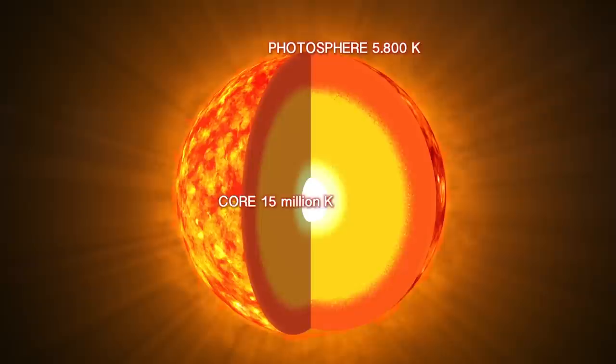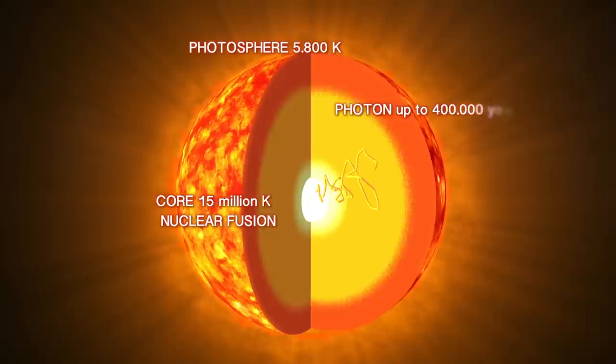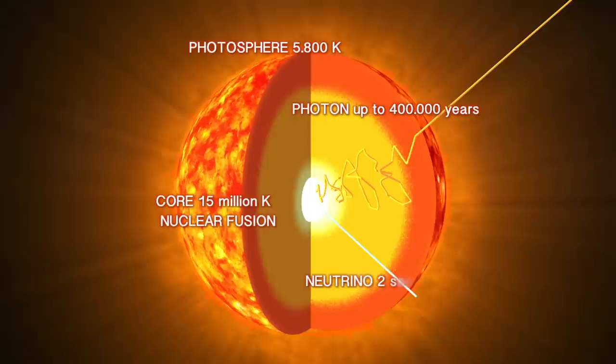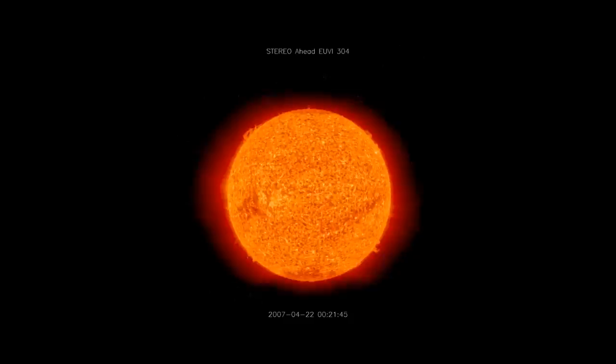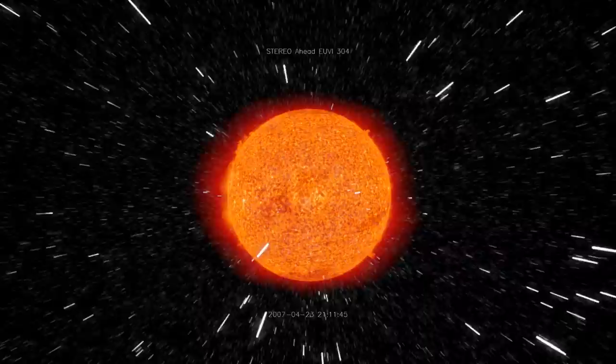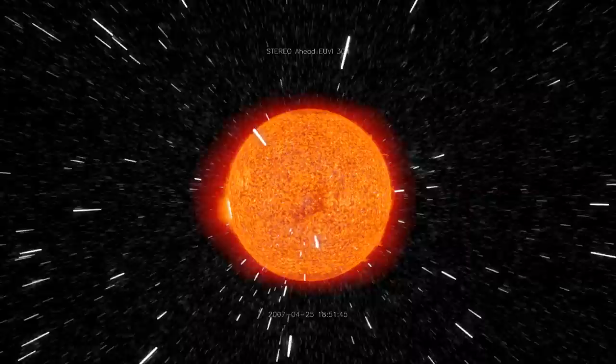Photons take up to 500,000 years to get out of the Sun, as they are constantly intercepted, absorbed and re-emitted. But neutrinos, having no electric charge, travel in a straight line from the core of the Sun. They come out at the speed of light as soon as they are created. Hypothetically, about three percent of the total energy radiated by the Sun is in the form of neutrino. The flux of solar neutrinos at the Earth's surface is on the order of 60 billion per square centimeter per second.